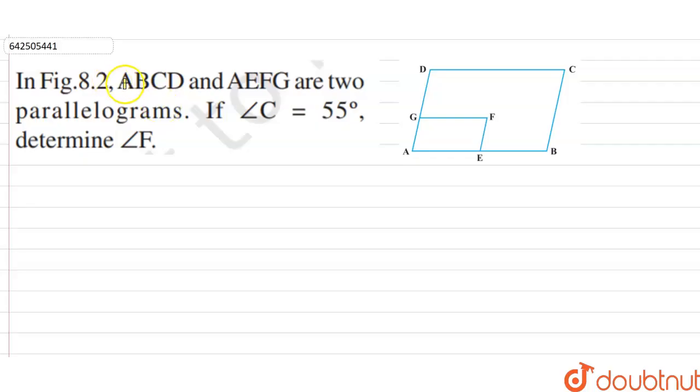Hi students, our question is in figure 8.2, ABCD and AEFG are two parallelograms. If angle C is equal to 55 degrees, determine angle F. In the question, it is given that angle C is equal to 55 degrees and ABCD and AEFG are two parallelograms.